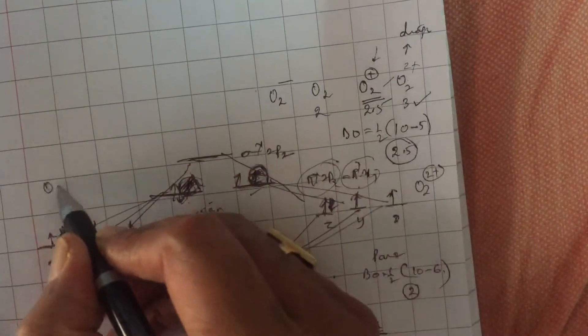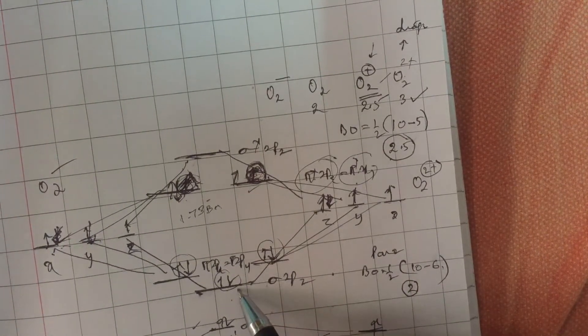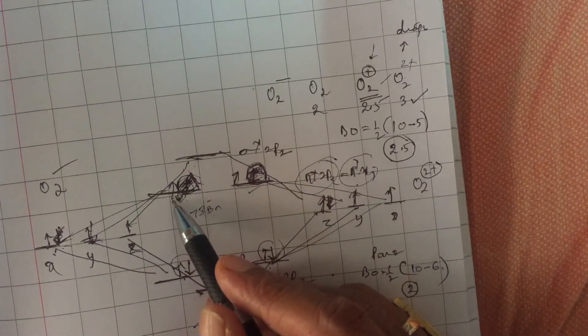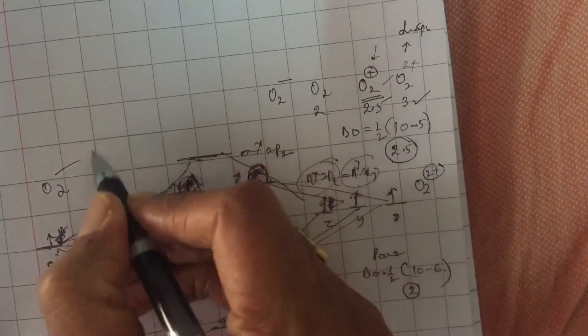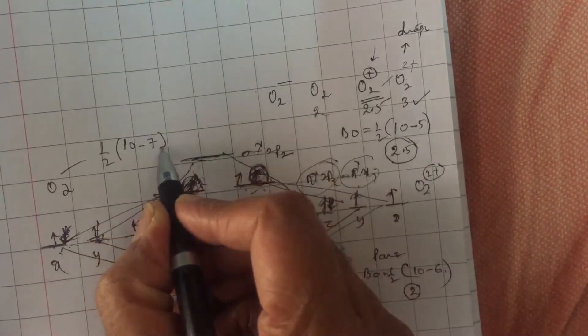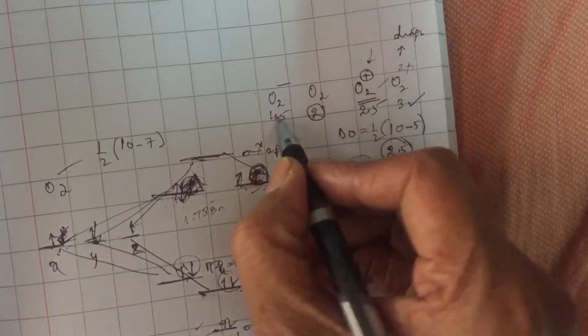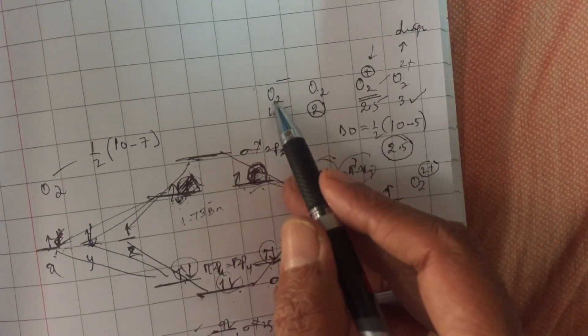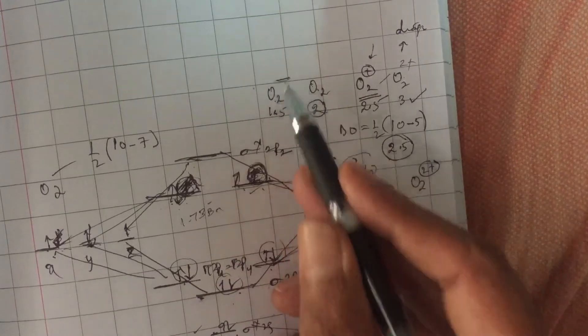Because of this, the configuration of O2⁻ became sigma 1s², sigma star 1s², sigma 2s², sigma star 2s², sigma 2pz², pi 2px², pi 2py², pi star 2px², 2py¹. You increase an electron in ABMO, because of which the bond order in O2⁻ becomes half into number of electrons in BMOs minus number of electrons in ABMO 7. That makes bond order 1.5. Original oxygen bond order was 2. Now O2⁻ bond order became 1.5. It means O2 is more stable than O2⁻.